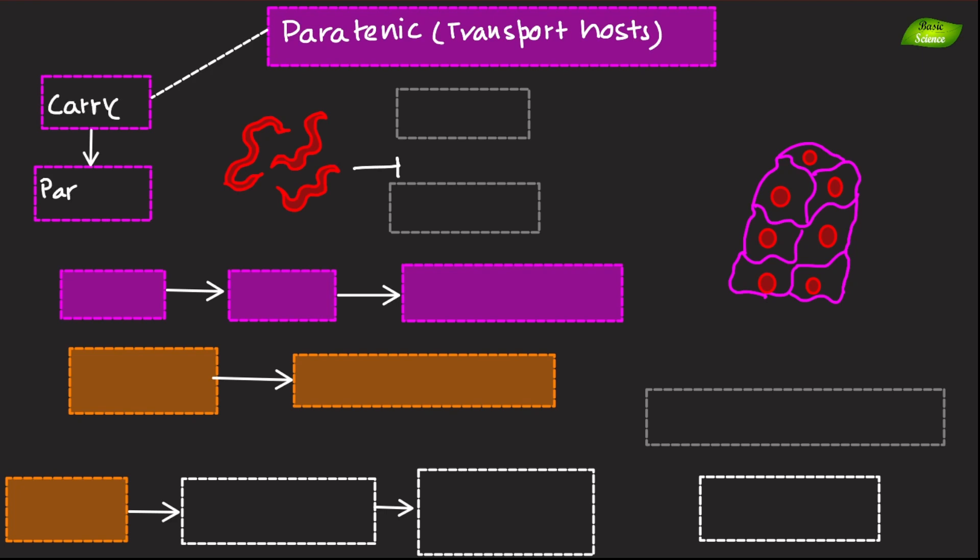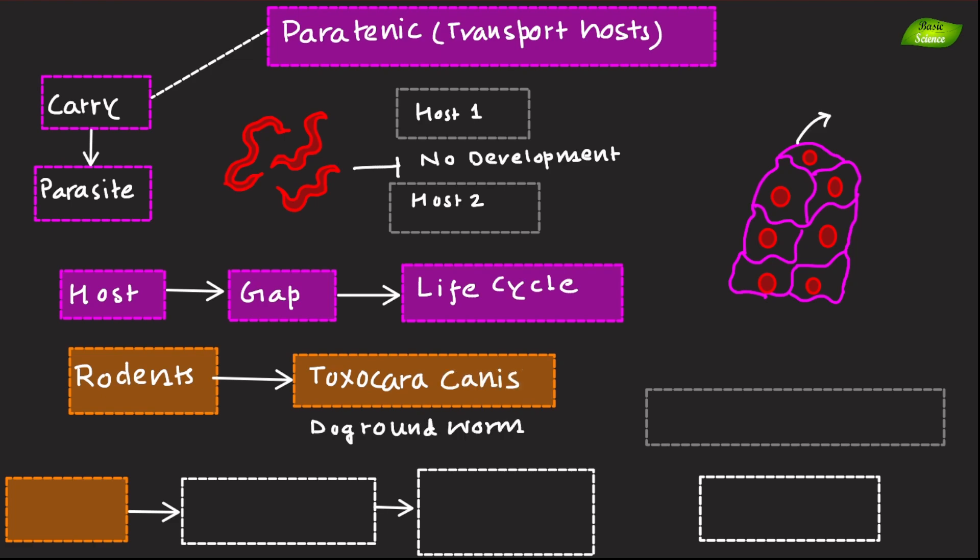Paratenic hosts carry the parasite to another host without the parasite undergoing any development. These hosts help bridge the gap in the parasite's life cycle. Example, rodents for Toxocara canis. Rodents can act as paratenic hosts for the dog roundworm, Toxocara canis. The larvae reside in the rodent's tissue until they are eaten by the definitive host, typically a dog.